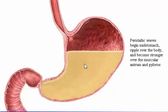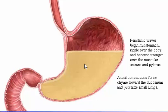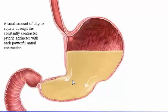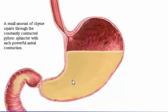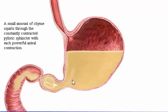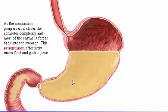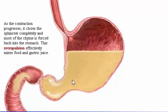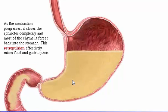Peristaltic waves begin mid-stomach, ripple over the body, and become stronger over the muscular antrum and pylorus. Antral contractions force chyme toward the duodenum and pulverize small lumps. A small amount of chyme squirts through the constantly contracted pyloric sphincter with each powerful antral contraction. As the contraction progresses, it closes the sphincter completely and most of the chyme is forced back into the stomach. This retropulsion effectively mixes food and gastric juice.